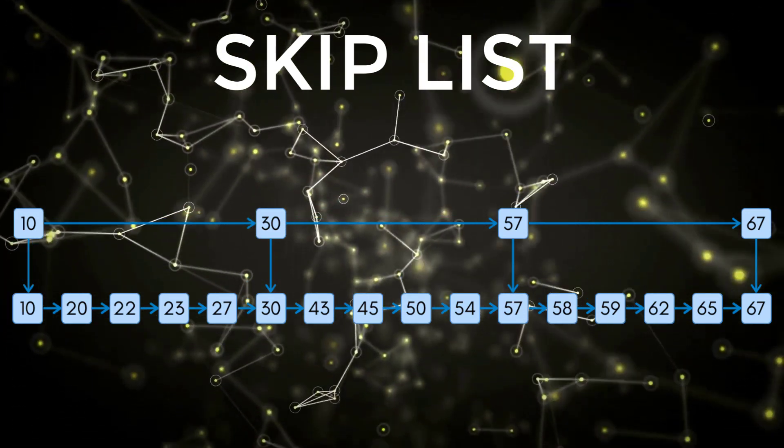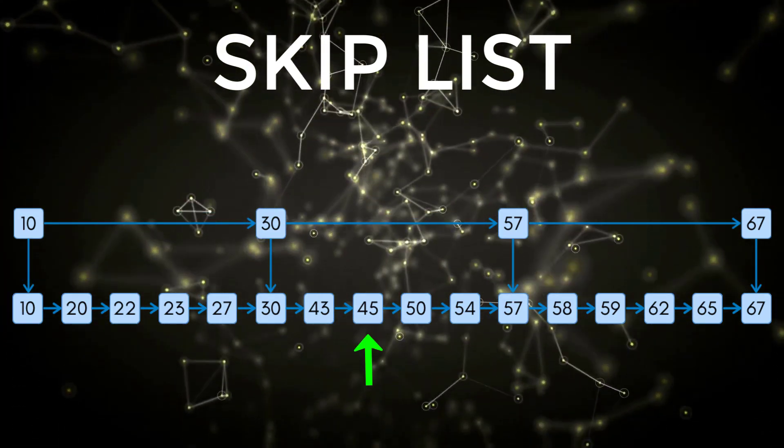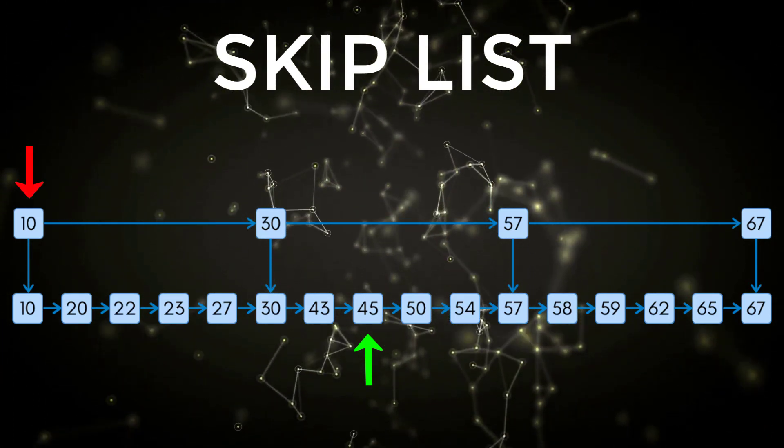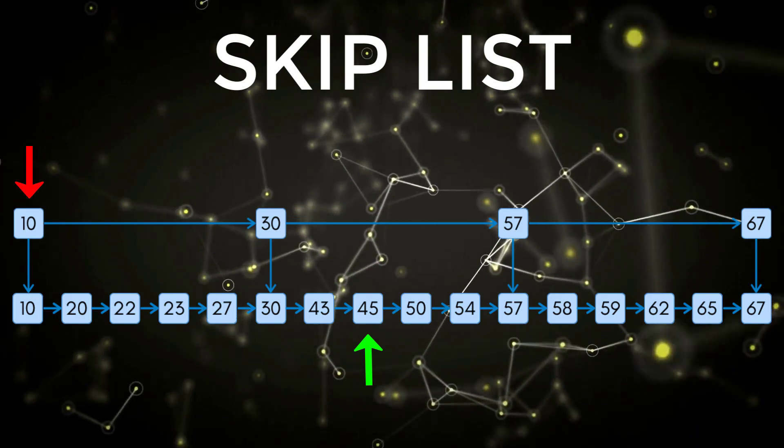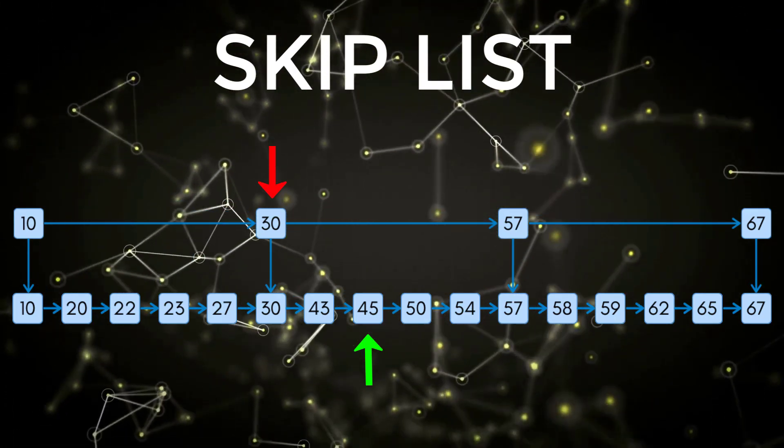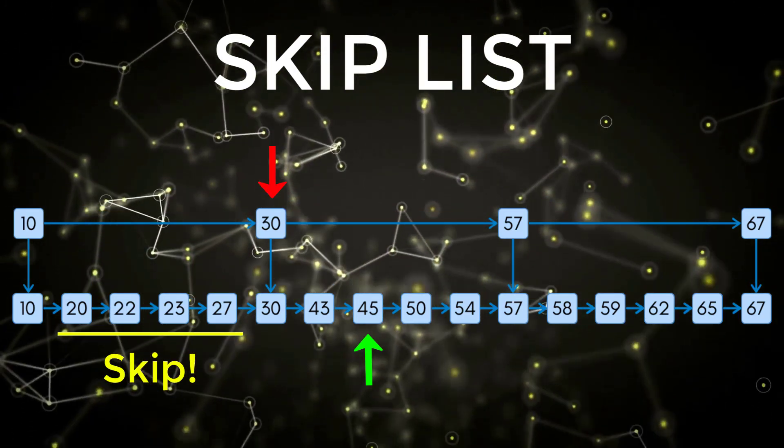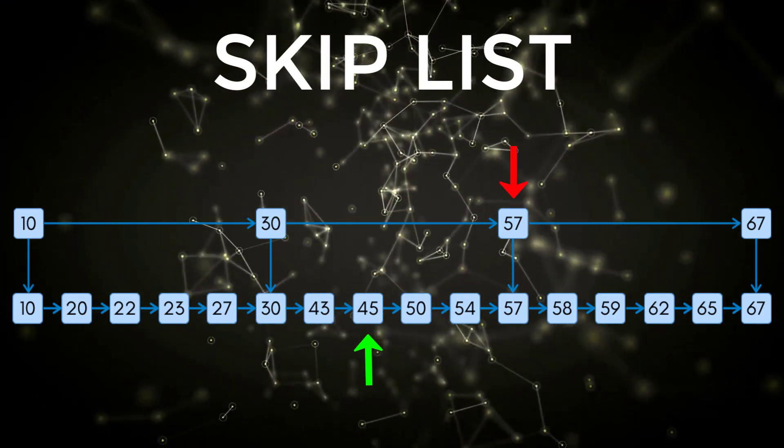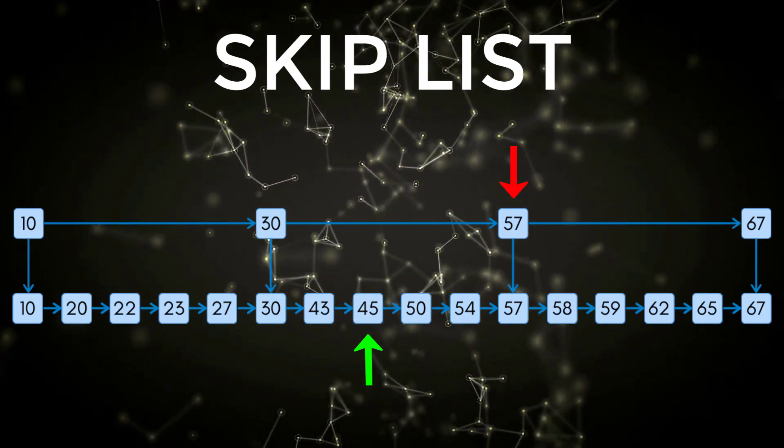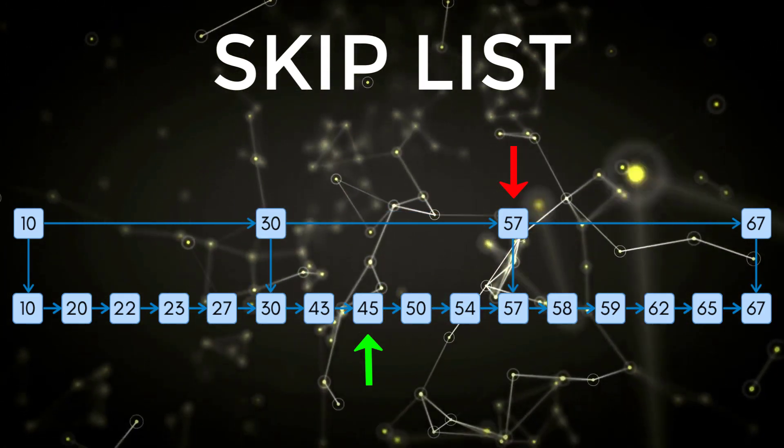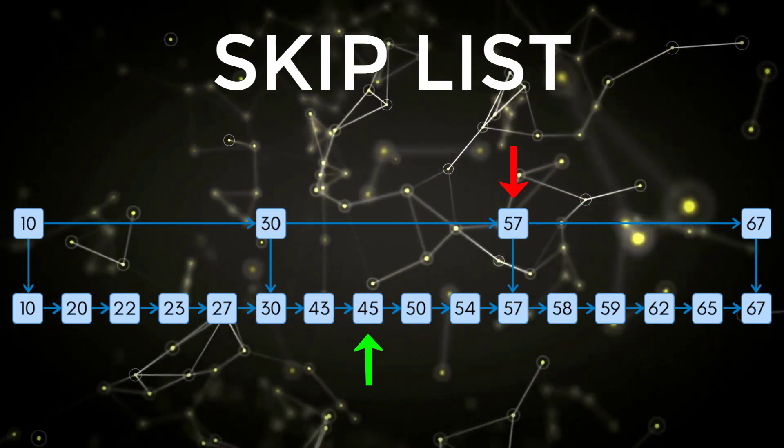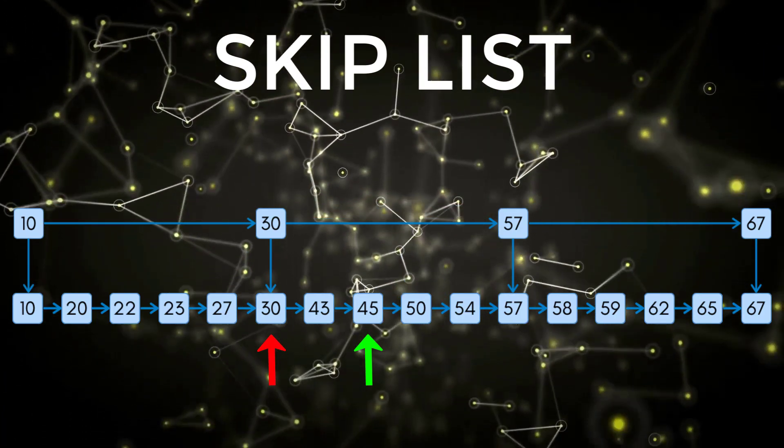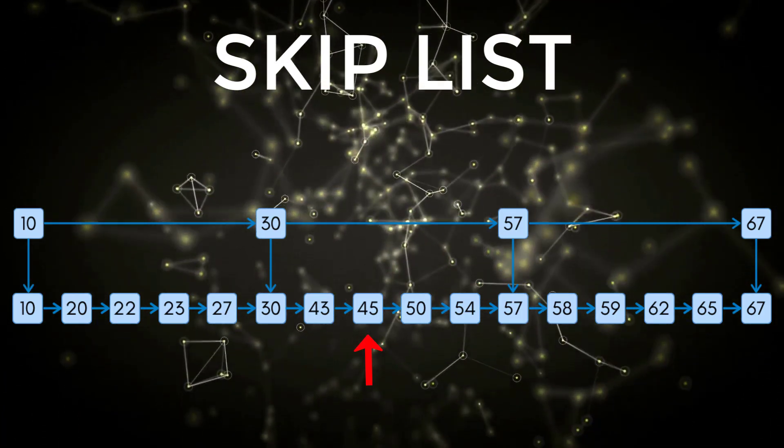So for example, let's say I wanted to search for the node 45. I would first go to my express lane, which starts at node 10. That is less than node 45. So I need to move forward to node 30. As a result of doing that, I got to skip a bunch of nodes in my normal lane. 30 is also less than 45. So I moved to node 57. However, node 57 is greater than 45. So now I know where I need to start my search in my normal lane. So from node 30, we moved to 43 and then 45. And then we found our node.